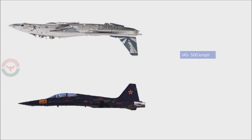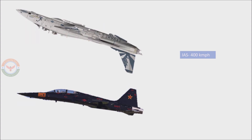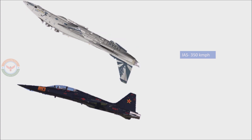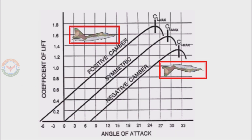Coming to the final query raised in the initial part of the video: what could the bogey — the Russian aircraft — have done to avoid the embarrassment? All that the pilot could have done is reduce speed, because if he had reduced speed Maverick would have tried to catch up and been forced to reduce speed too. But there is a limit to how much he could reduce, because inverted flight requires a high angle of attack, and eventually he would reach a point where he could not sustain the flight.